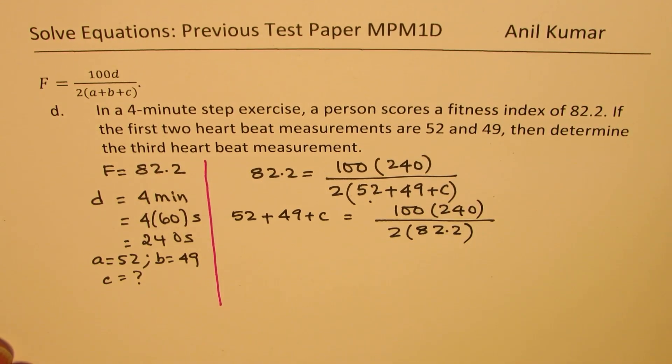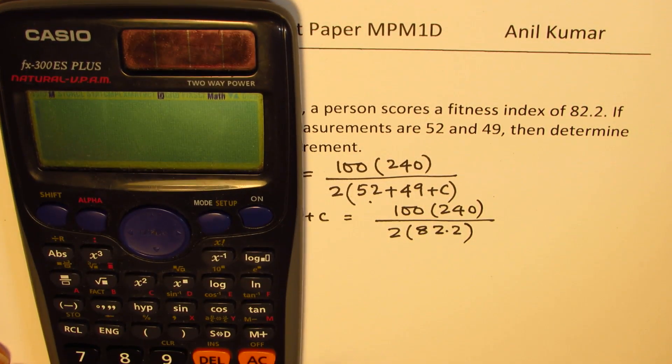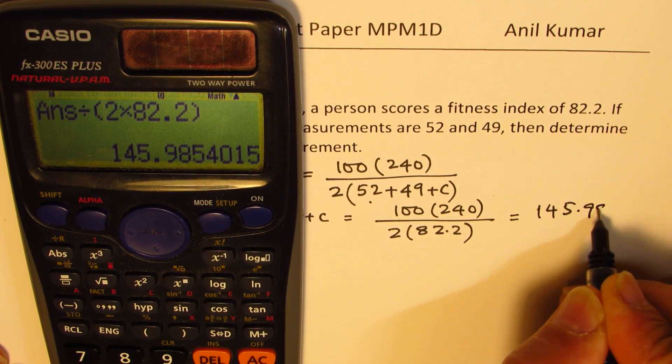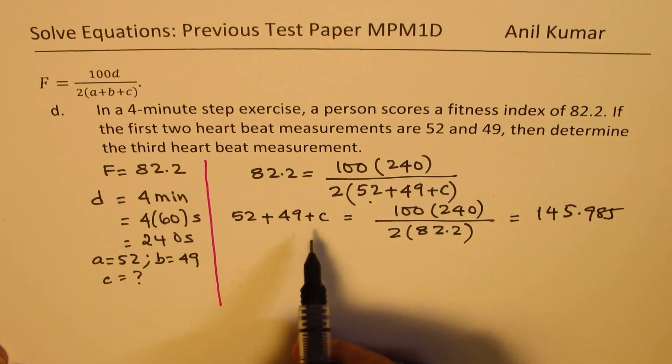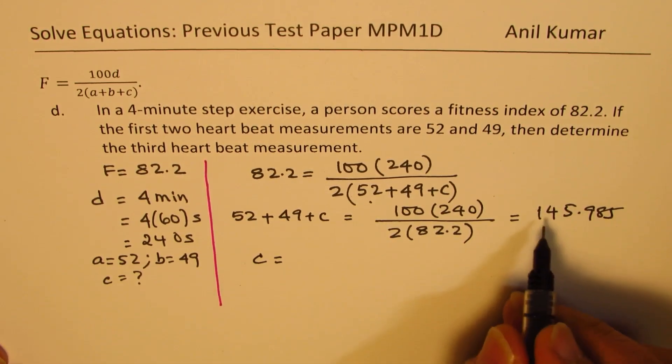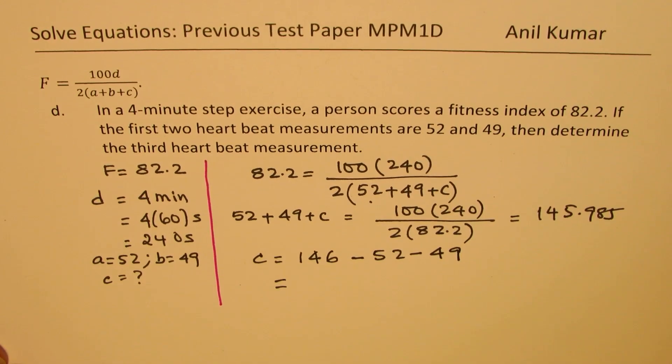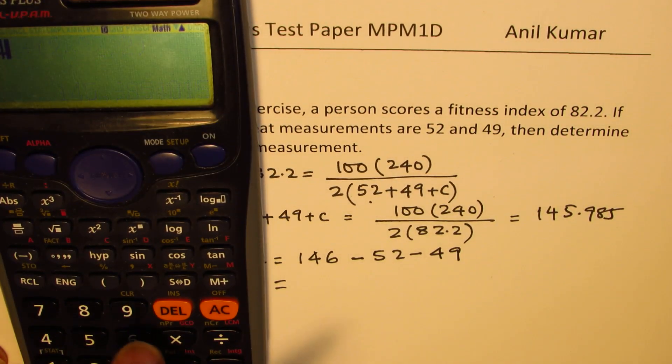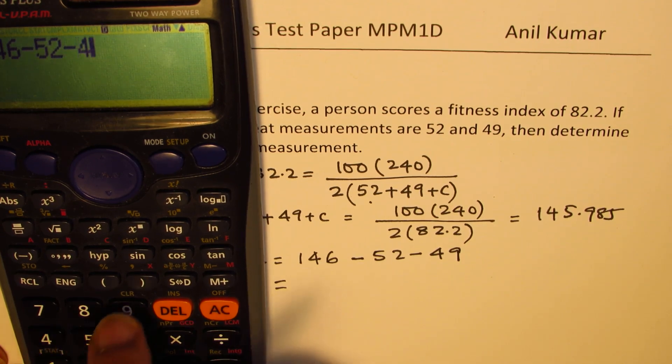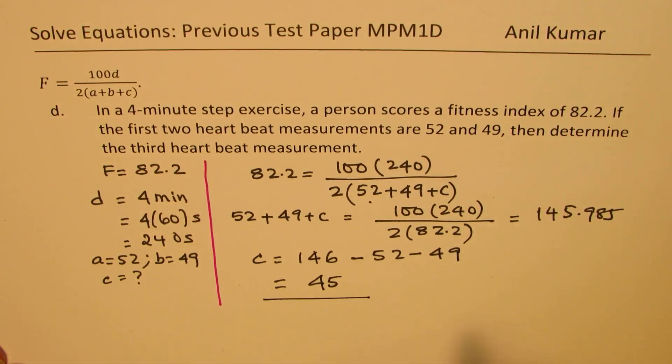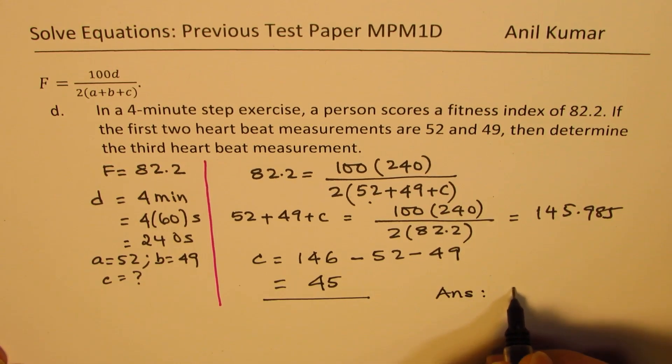Since we are using calculator, let us straight away find the decimal equivalent. We get 100 times 240 divided by (2 times 82.2). What we get here is 145.985. So value of C should be equal to all this. We can round this to 146 minus 52 minus 49. So I'm rounding that to 146 and from that we'll take away 52 and then take away 49 to get our answer, which is 45. So the value of C is 45.